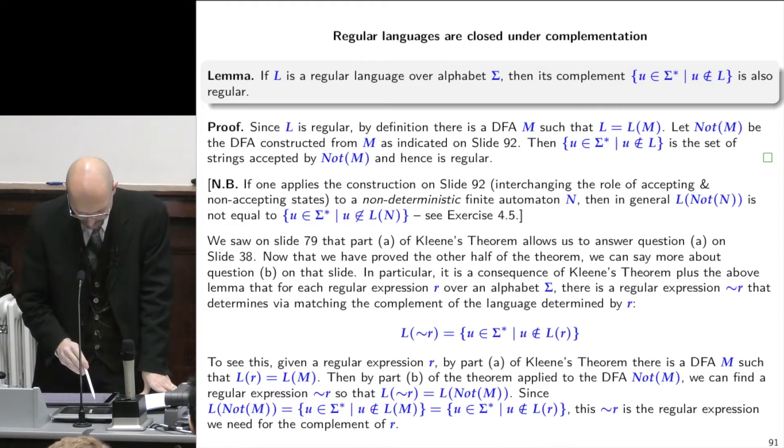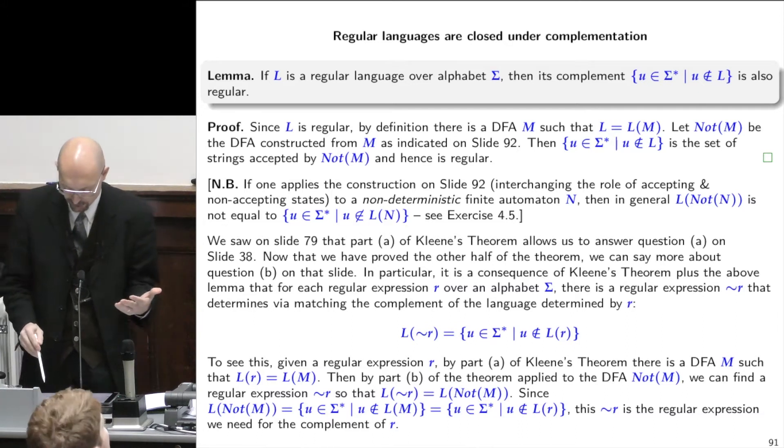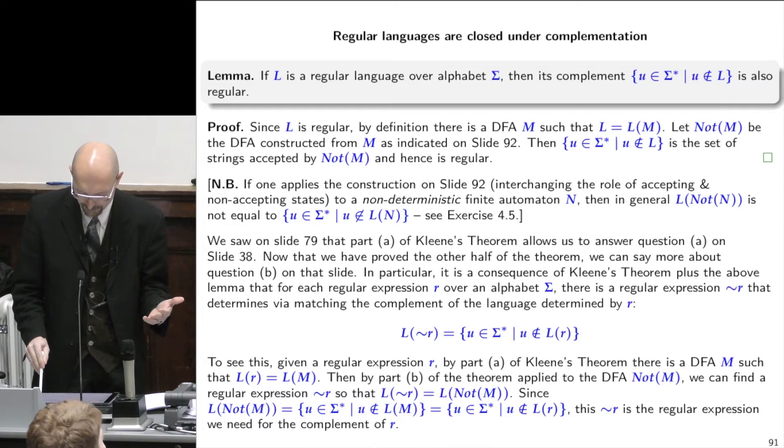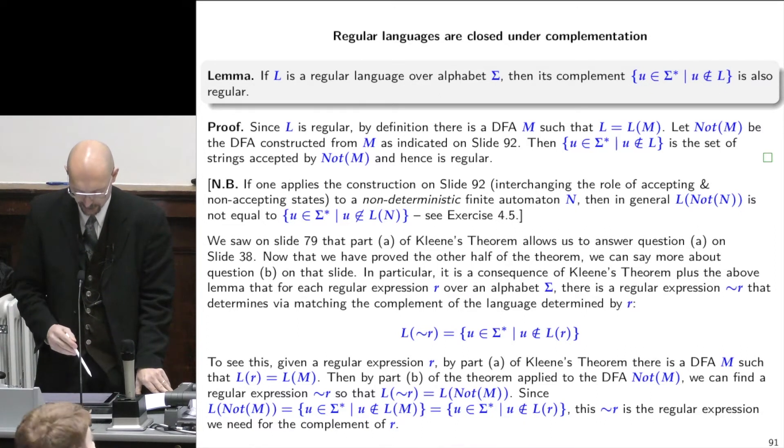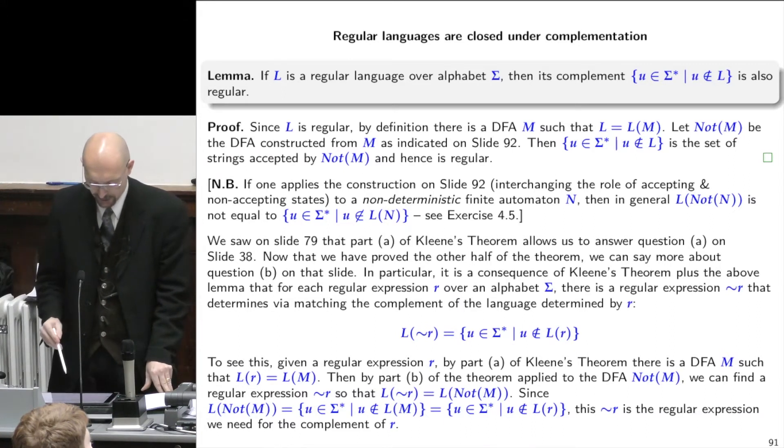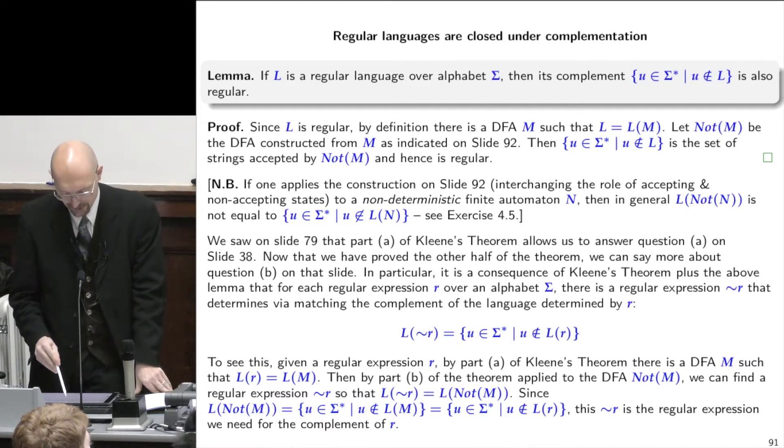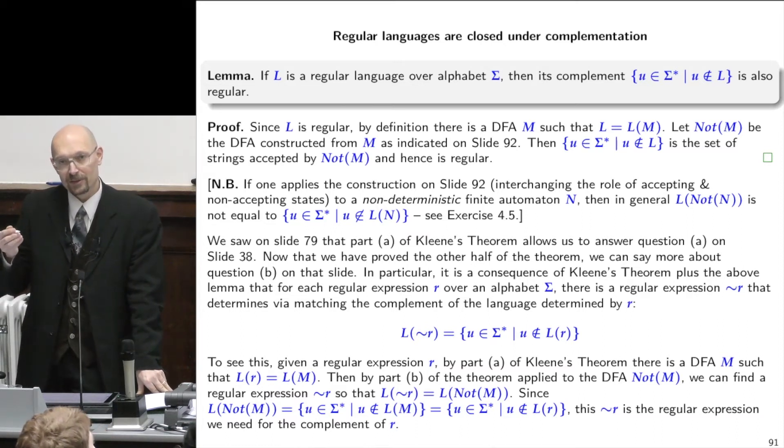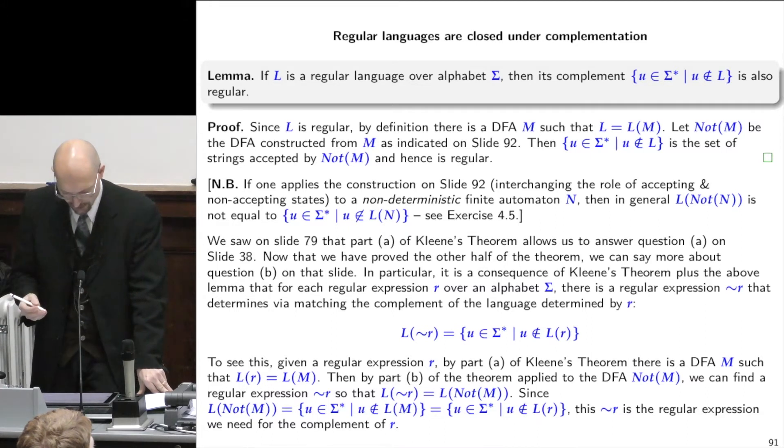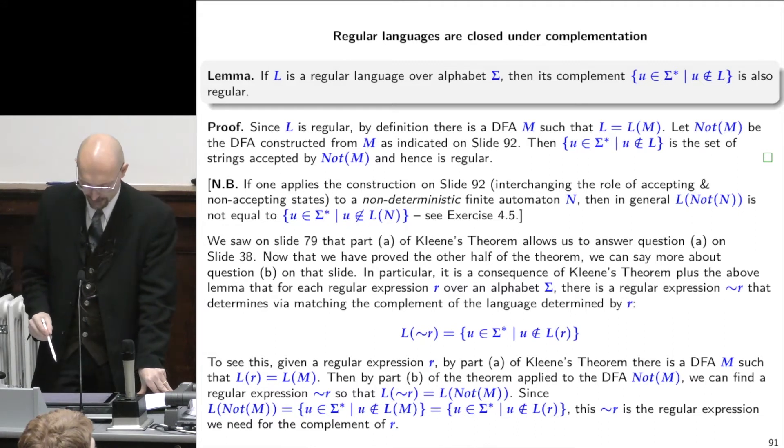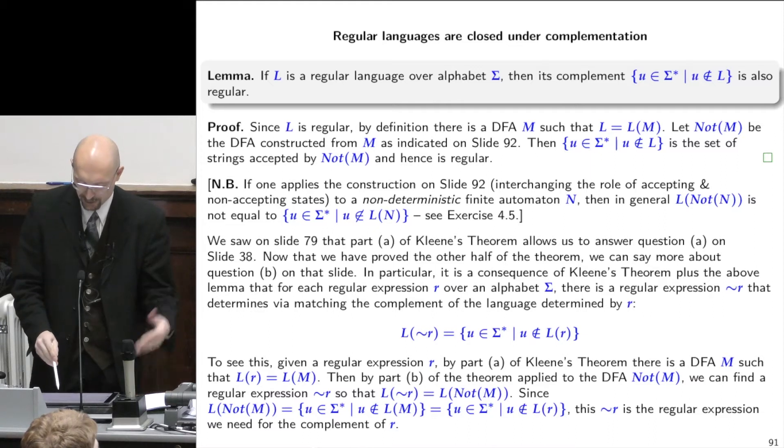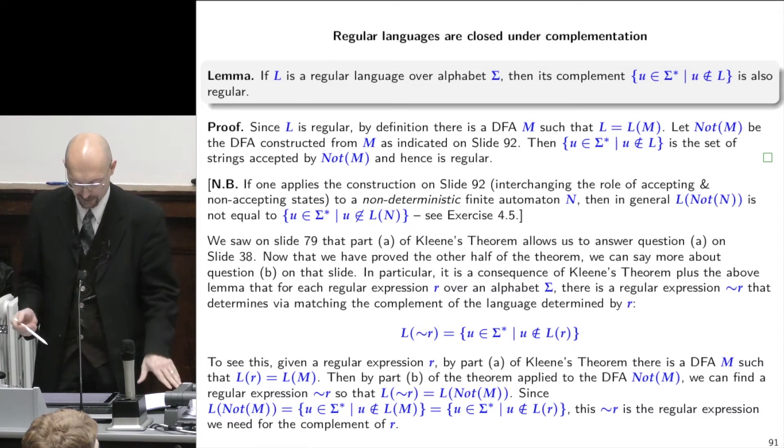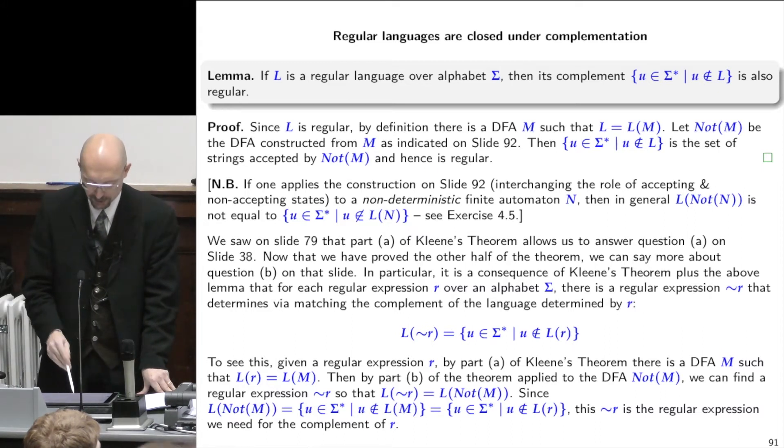So if L is a regular language over alphabet sigma, then its complement would be the language made of all the strings in sigma star that are not in language L. So this complement, we now prove, is also a regular language. And we do that by saying, because L is regular, there exists by definition a DFA M that recognizes L. Now let's build a DFA called NOT M by taking M and exchanging every accepting state into a non-accepting state and every non-accepting state into an accepting state. This is the definition of NOT M. Then the language of the strings that were not accepted by the first automaton is exactly that of those that are accepted by the second automaton and vice versa. And because it is accepted by some automaton, then it is regular.